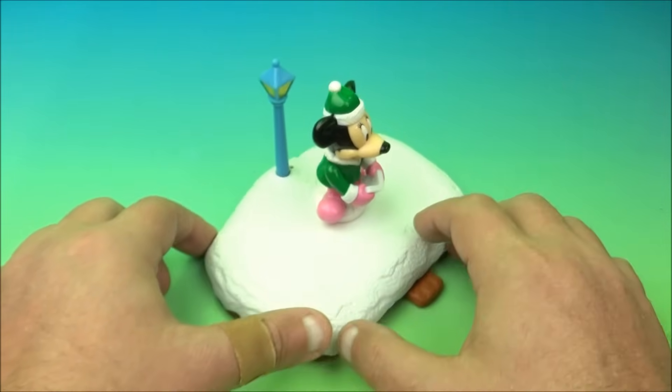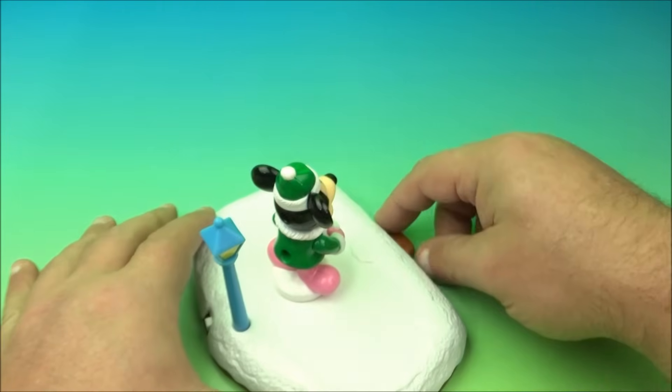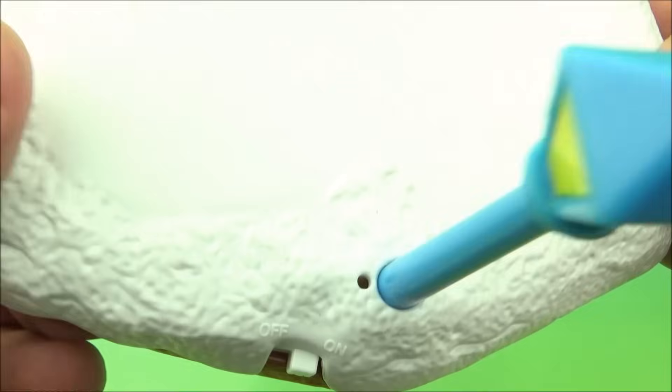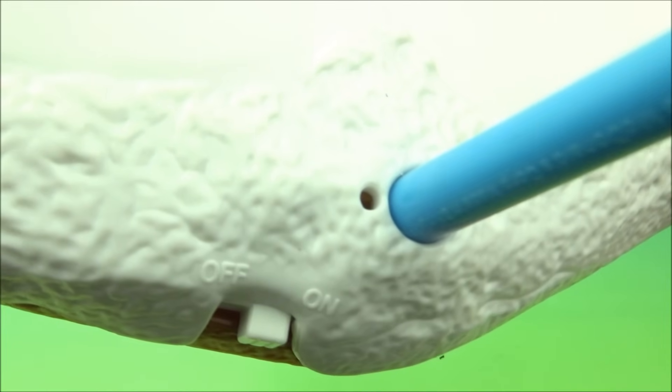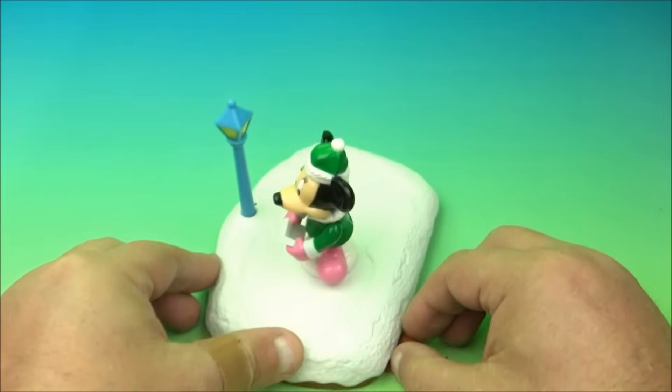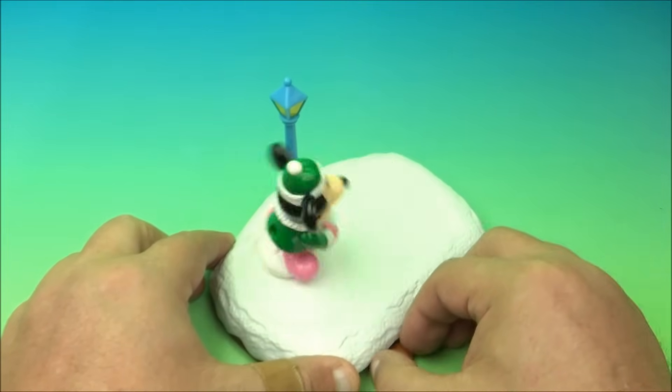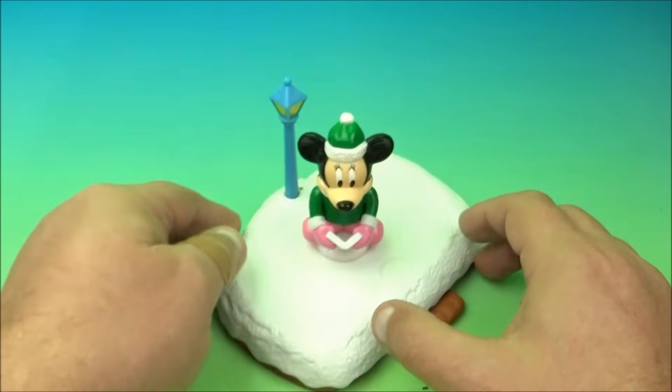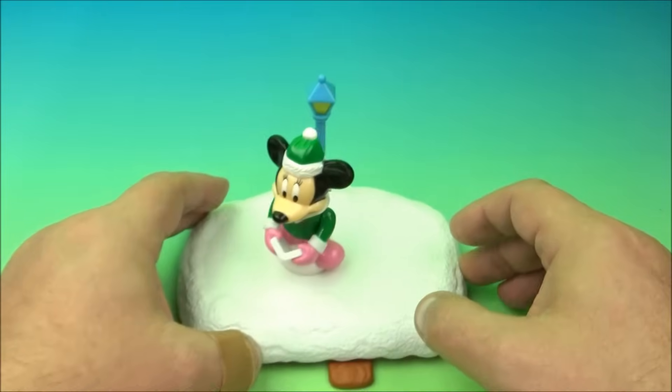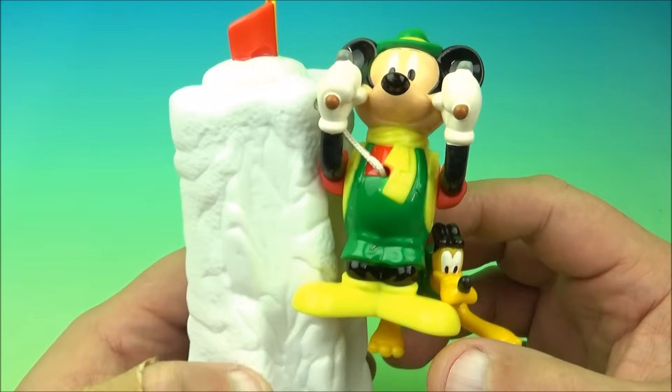But here's something that's really cool, on this side right here there's a little switch. You flip this on and then check this out, you ready? [Music plays] That's so awesome. So it plays a Christmas carol while you're sliding Minnie Mouse around the ice skating pond. That's so awesome. Oh get back over here, how cute is this? This is one of the cutest most adorable sets you're ever gonna see. I absolutely love this thing.